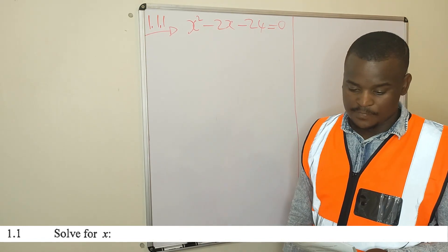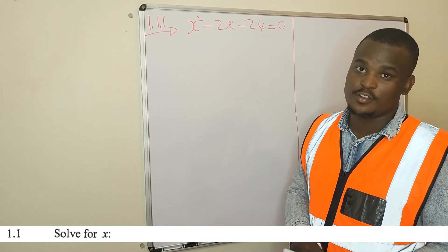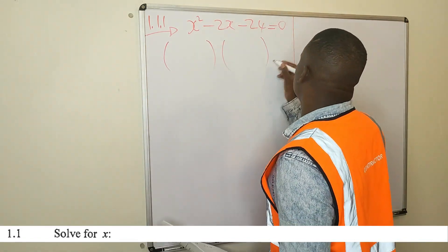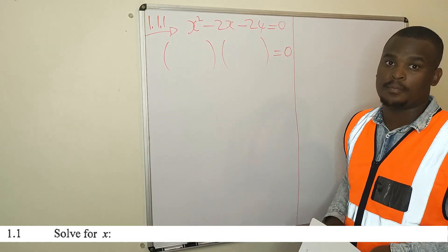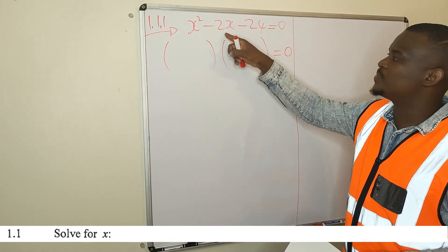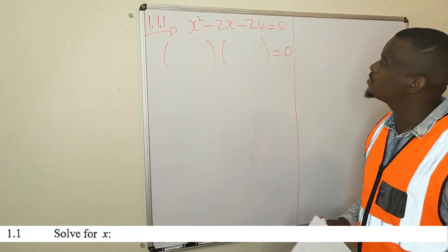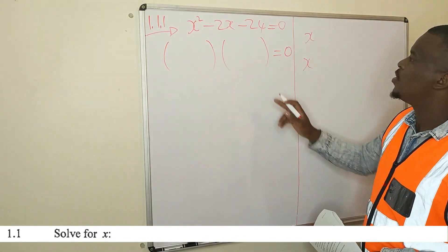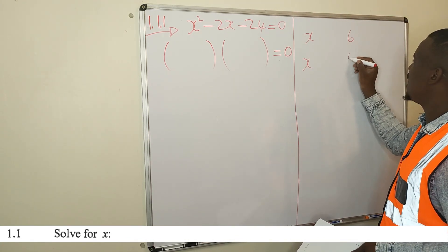Here's the first one — solve for x. The first step with these ones, you factorize it into two brackets equal to 0, when it is in standard form. Standard form is ax² + bx + c = 0. So you factorize it. What are the factors of x? It's x and x. What are the factors of 24? You can say 6 and 4.